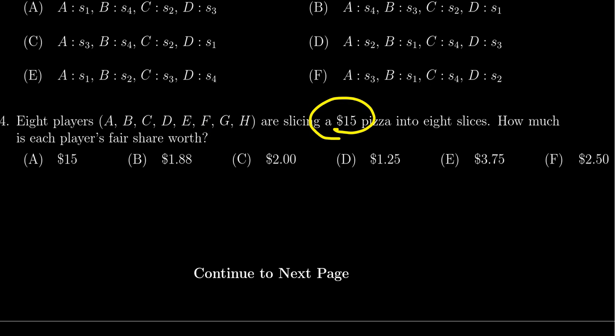if the total value is 15 and there are eight equal players, then a fair share would be the total value divided by eight. So we would take 15 and divide it by eight.